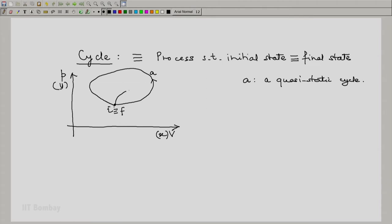I can have another quasi-static cycle, let me call it B. B is another quasi-static cycle. So if you consider A, throughout the process the state was known because it was a state of equilibrium.